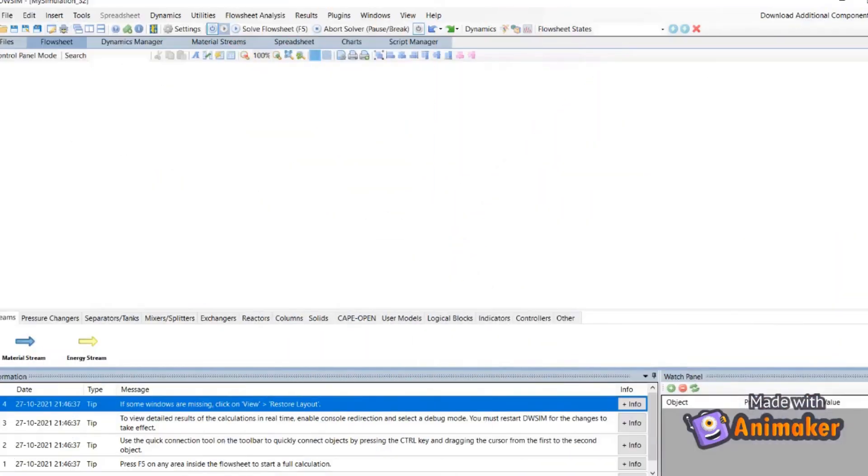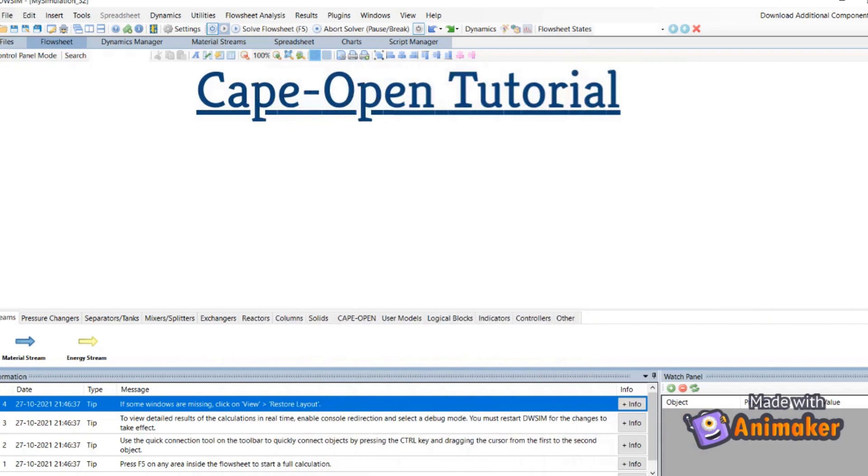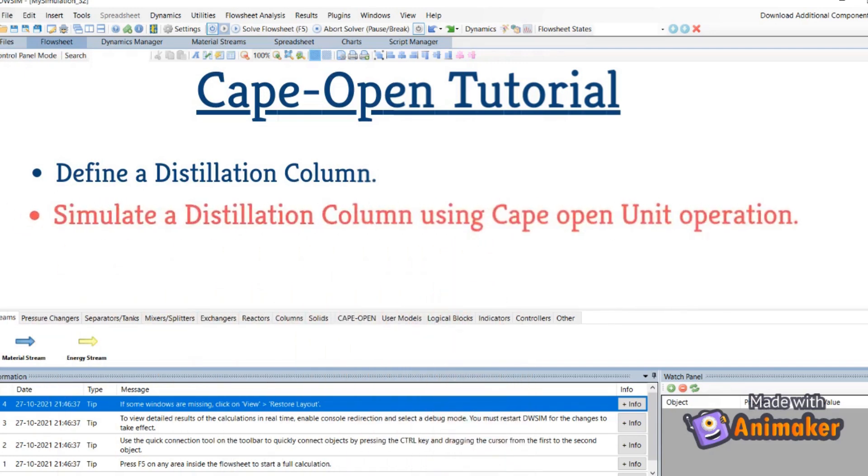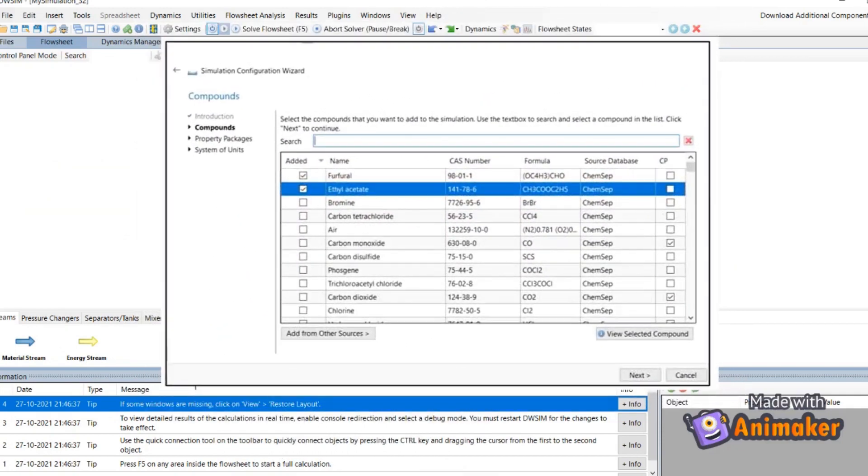After finishing the theory part, we are now moving on to the simulation part where we have completed one CAPE-OPEN tutorial in DWSM for a better understanding of our main flowsheet. In this section, we will learn how to use the distillation column in DWSIM. For this, we define a distillation column and use the CAPE-OPEN unit operation to simulate a distillation column. First, from the list of chemical compounds, we choose furfural and ethyl acetate as our chemical compound and press next button.